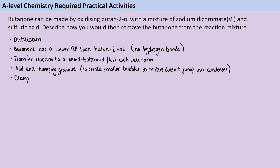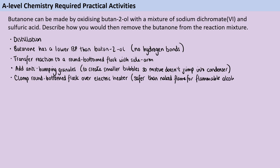We're then going to clamp the round bottom flask above an electric heater. The reason that we're using an electric heater rather than a Bunsen burner is because it's much safer to not have a naked flame around this reaction where we're using alcohols, which are really flammable.